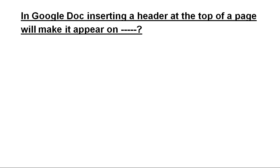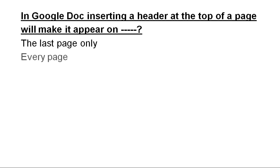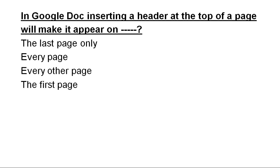In Google Docs, inserting a header at the top of the page will make it appear on: the last page only, every page, every other page, or the first page only. The answer is: the header will appear on every page.